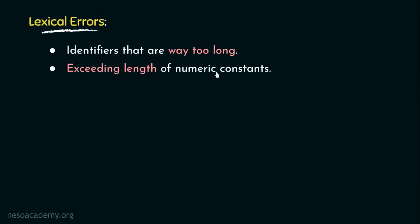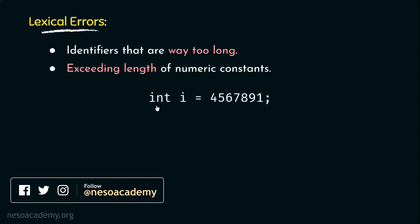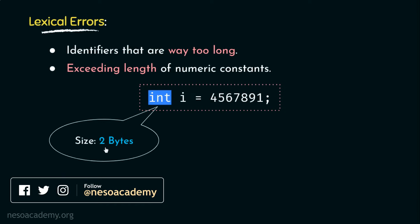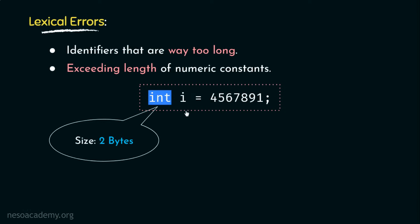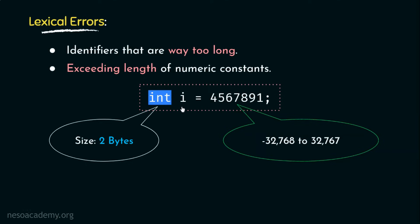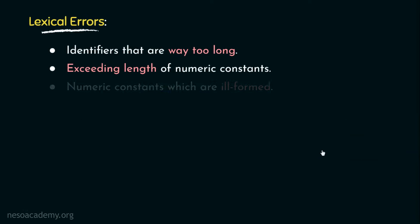Exceeding the length of numeric constants is also considered a lexical error. For instance, consider a statement where variable i has been specified with the int data type and initialized with a value. Suppose the platform allocates two bytes for int type variables — in that case variable i is only allowed any value from -32,768 to 32,767. Exceeding this range is a lexical error. Numeric constants which are ill-formed are also considered lexical errors.